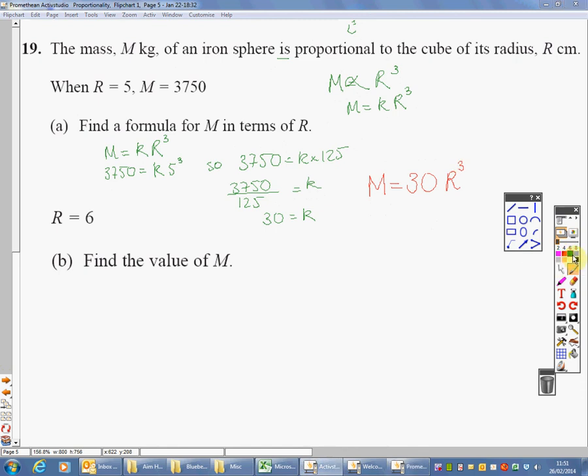Second bit, find the value of M. It says there, R equals 6. Now, find the value of M. So, quote our formula. M equals 30R cubed. Substitute in to our equation for the values we've got. M equals 30 times 6 cubed. Well, 6 cubed is 216. M equals 30 times 216.